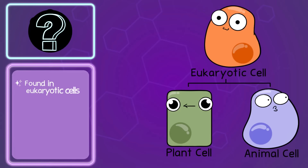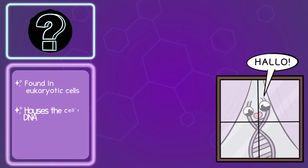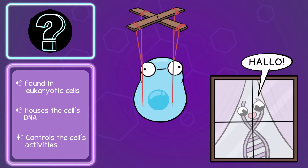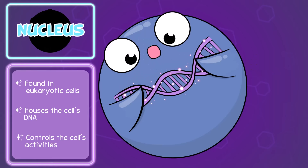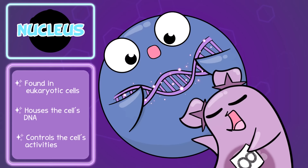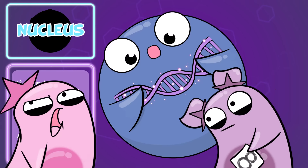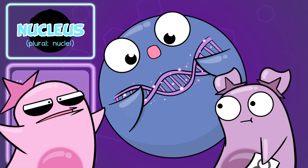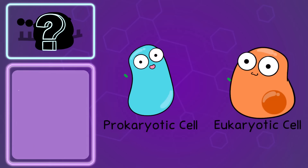This one is in eukaryotic cells, both plant and animal cells. This is where DNA is found in the cell. It not only houses the DNA, but it also controls the cell activities. It's the nucleus. I give it an 8 out of 10. Easy to draw and it holds cool stuff. But I'm not a fan of the plural form — nuclei. Why can't it just be nucleuses? Why must it be so fancy? But I'll move on.